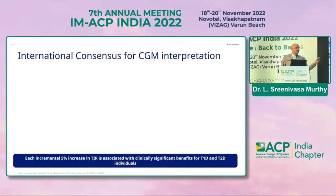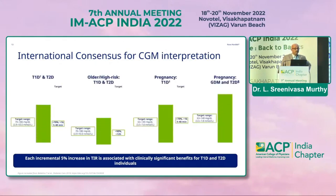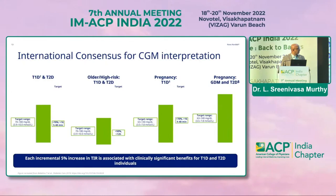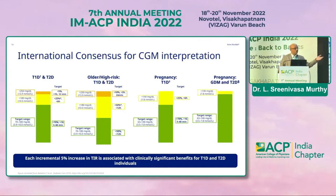The international consensus defines, through CGM, that an incremental 5% increase in TIR is associated with clinically significant benefits for both type 1 and type 2. This international consensus, published in Diabetes Care in 2019, states you need to spend 70–80% of the time in the 70–180 mg/dL target range: more than 50% for type 1, older, or high-risk type 2; more than 70% for type 1 and type 2 in general. Time above range — more than 180 mg/dL should be less than 25%, and more than 250 mg/dL less than 5%.